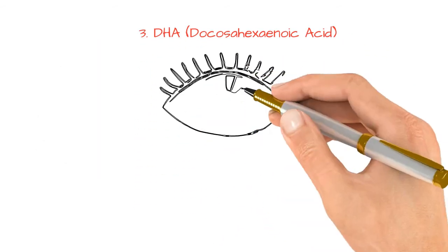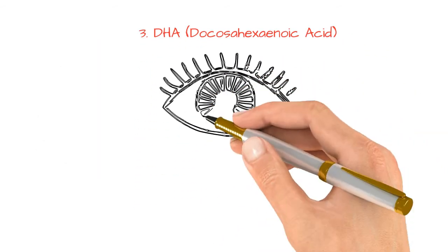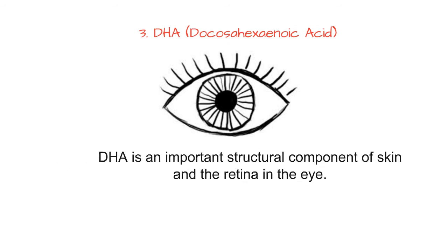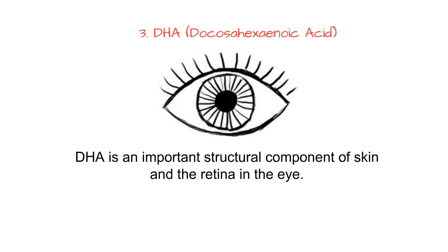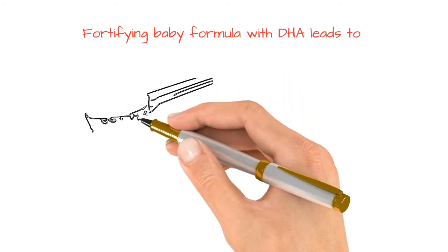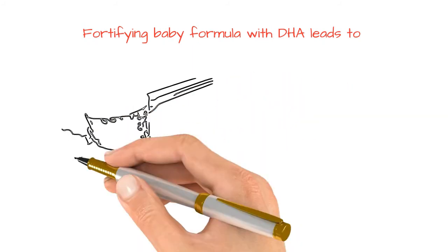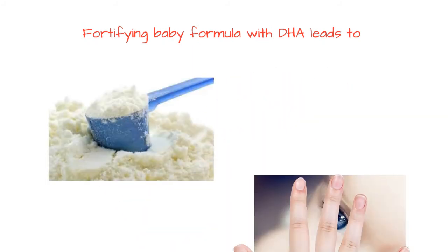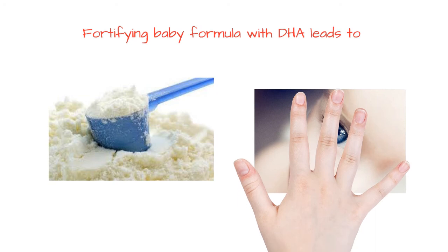The third is DHA, Docosahexaenoic Acid. DHA is an important structural component of skin and the retina in the eye. DHA is absolutely vital for brain development and function in childhood, as well as brain function in adults.